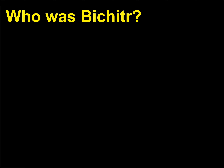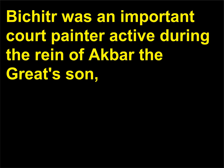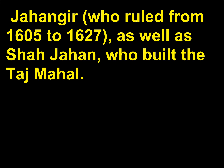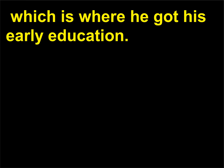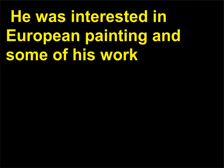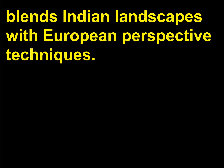Who was Bichitra? Bichitra was an important court painter active during the reign of Akbar the Great's son Jahangir (who ruled 1605–1627), as well as Shah Jahan, who built the Taj Mahal. Bichitra was a skilled miniature painter who was possibly raised by the court, which is where he got his early education. He was interested in European painting and some of his work blends Indian landscapes with European perspective techniques.